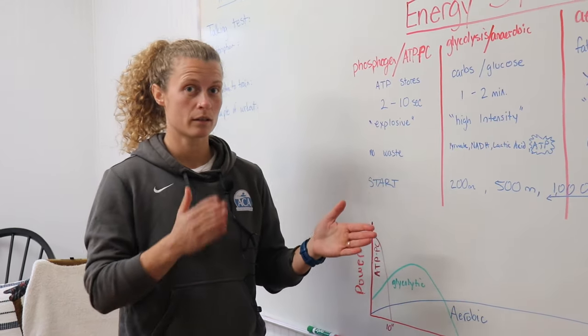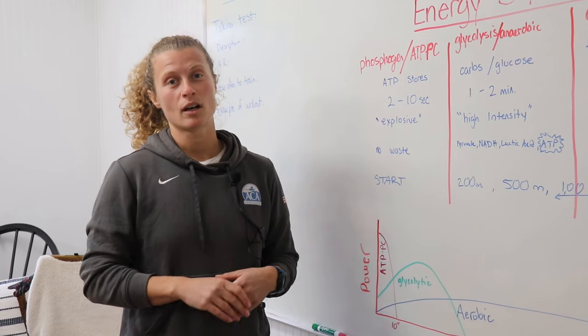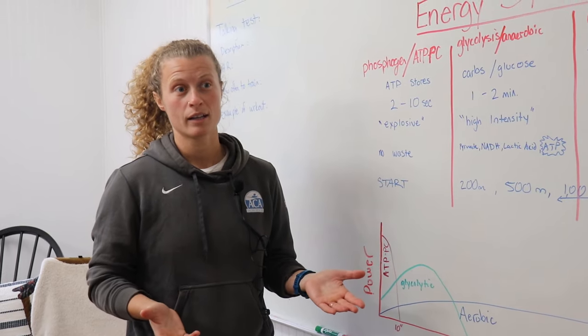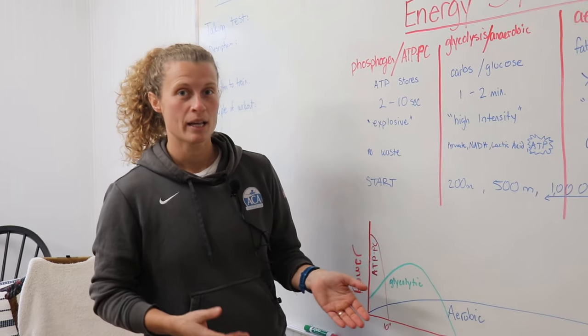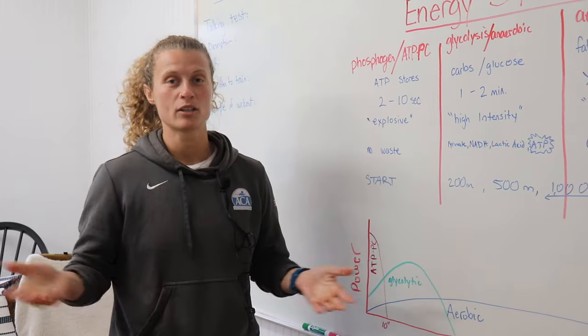So we start with zone one, then go to two, three, four, five. I'm going to talk today about what those zones are in relation to the energy system, and then we'll talk about how to use that for your race strategy.